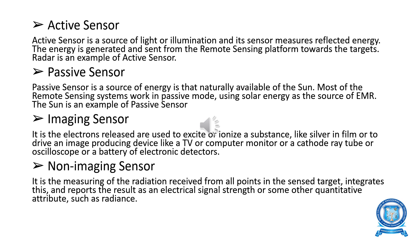Active sensors: An active sensor is a sensor of light or illumination, and its sensor sends the measured reflected energy from the surface. The energy is generated and sent from a remote sensing platform towards the target. The best example for active sensor is radar. Active sensor instruments like radar, LIDAR, sounder, and laser altimeters are different examples used in active sensors.